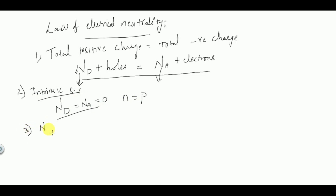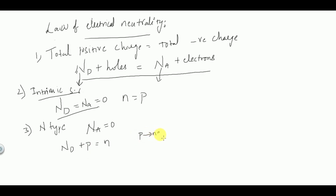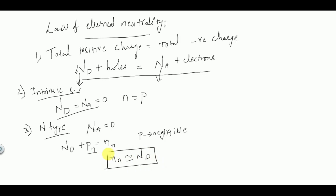In the case of an N-type semiconductor, we have donor impurities — fifth group elements are added to the pure intrinsic semiconductor. Therefore, we only have ND and NA equals zero. So the equation becomes: ND plus P equals N. Since holes are minority carriers in N-type semiconductor, P is very small and negligible. So NN is approximately equal to ND.